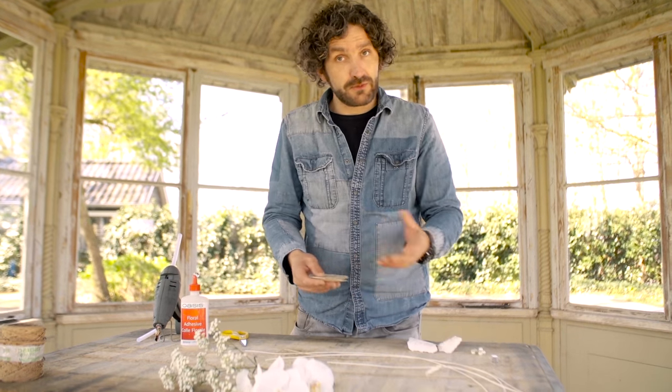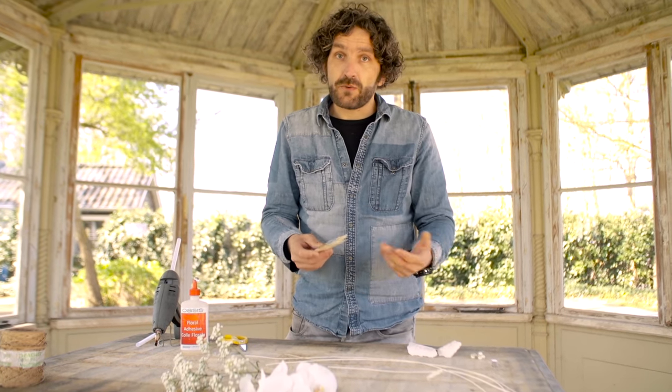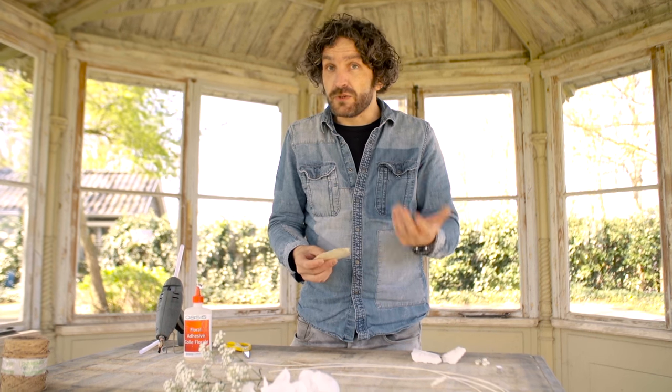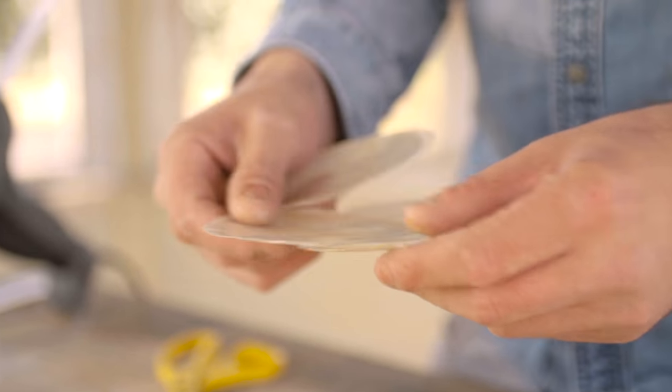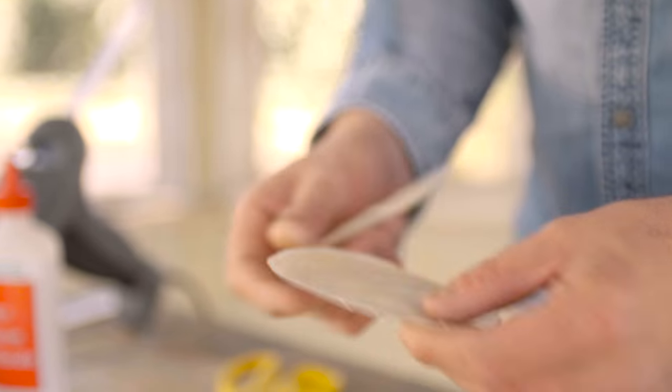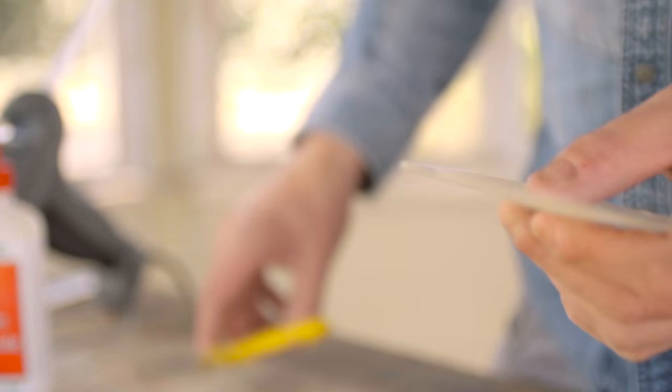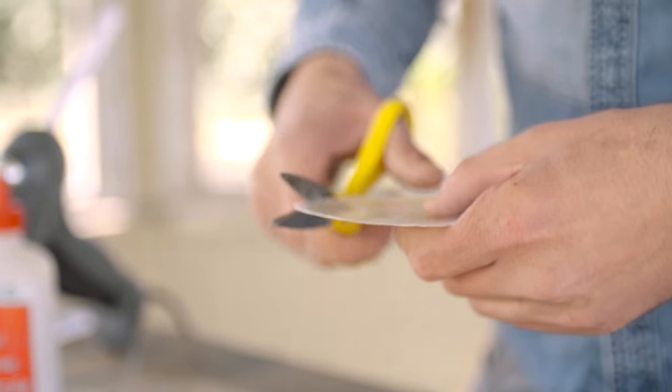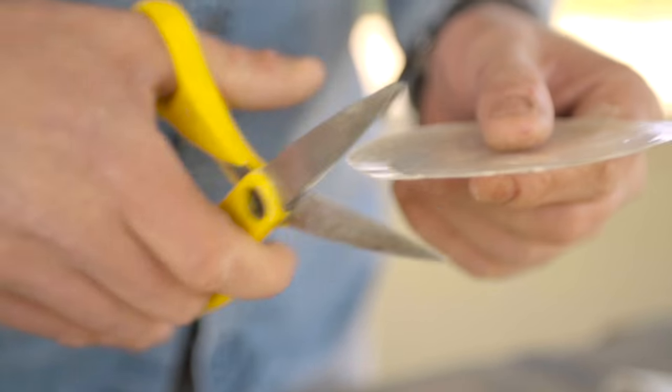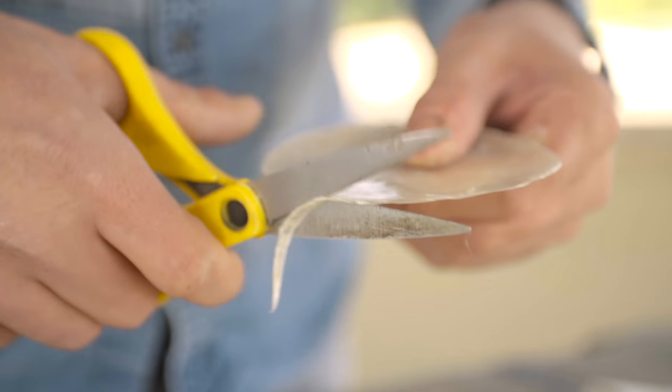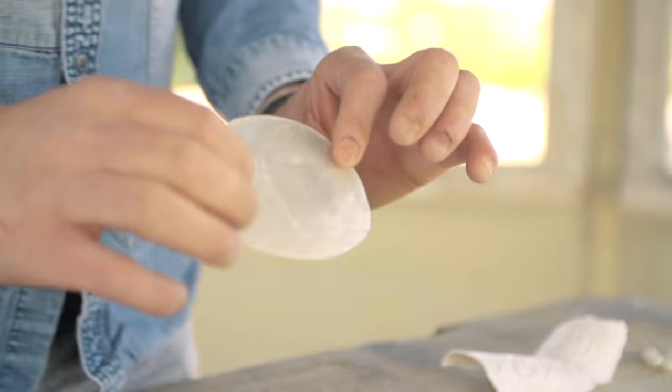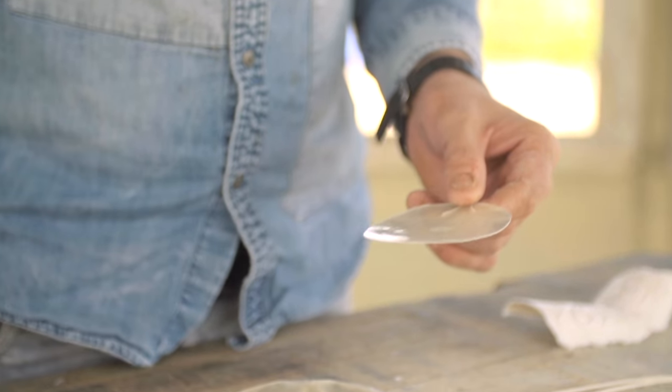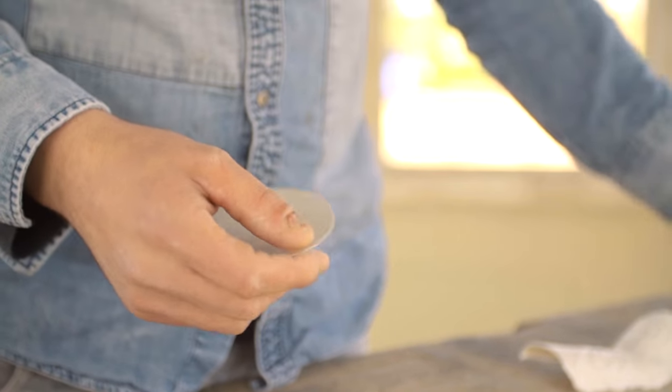We're going to use some simple materials and use them in such a way that you can create a corsage really quick. So what we have here is oyster shells and basically what we're going to do with these is give them a nice cut so that all the damaged edges are gone. We're then going to use some hot glue to fix these little things.